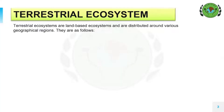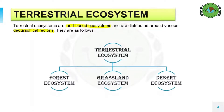Terrestrial ecosystem. As the name suggests, terrestrial ecosystems are land-based ecosystems that are distributed around various geographical regions. These are classified as forest ecosystem, grassland ecosystem and desert ecosystem.